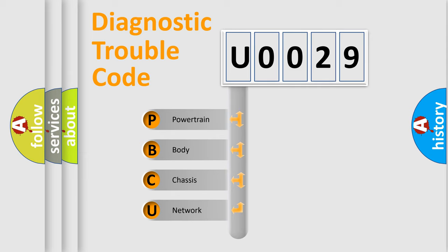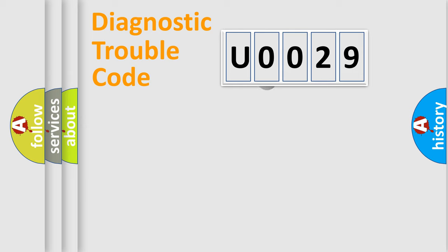We divide the electric system of automobile into four basic units: powertrain, body, chassis, and network. This distribution is defined in the first character code.